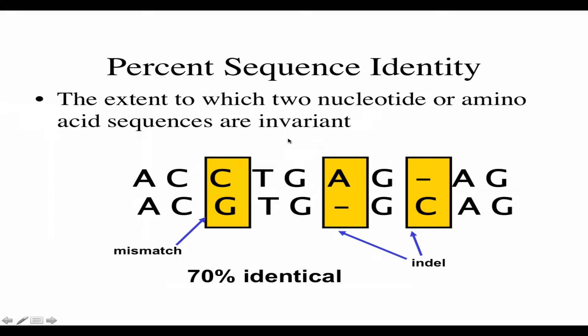We could use percent sequence identity as a measure — how many of the letters compared to the total length of the sequences are matching. In this case, we have a couple of mismatches, the rest of the letters match, and we also have a couple of gaps inserted. We're counting a gap as a one mismatch because we have an A aligned to a gap. So these two sequences come out as 70% identical.